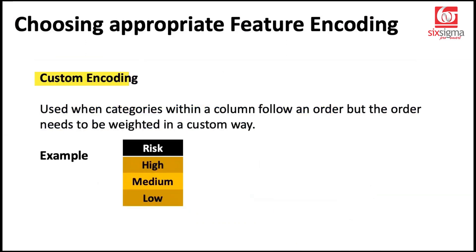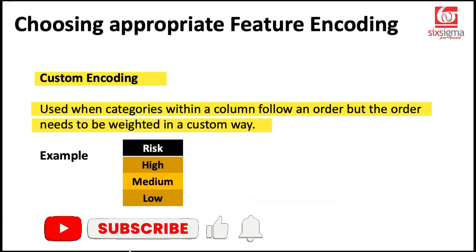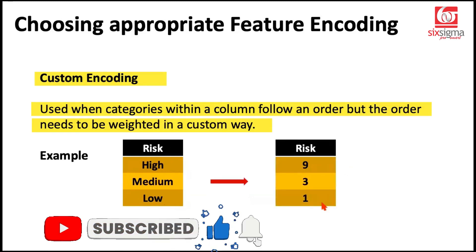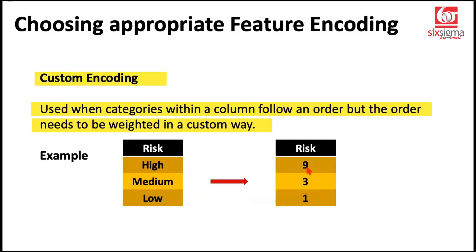An extension of ordinal encoding could be custom encoding. Custom encoding is applicable when you don't want to go linearly. For example, in a credit risk assessment, high has much greater impact compared to medium and low. With your subject matter knowledge, you assign relative weightages. Ordinal encoding would always go linearly: zero, one, and two. Custom encoding could say that high is three times more severe compared to medium, and medium is three times more compared to low. We use this encoding when a column follows an order but needs to be weighted in a custom way.